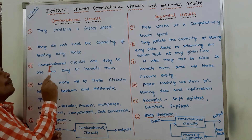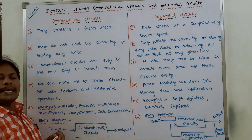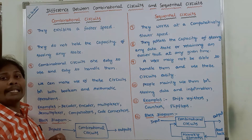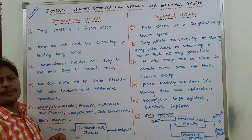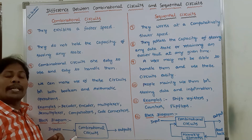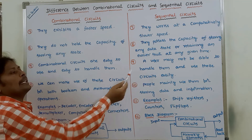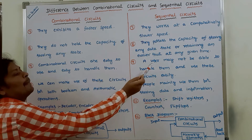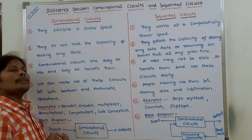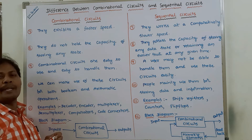Ninth point: combinational circuits are easy to use and easy to handle. It is very easy to use and handle combinational circuits, with no difficulty. Whereas in the case of sequential circuits, a user may not be able to handle them and use these circuits easily. Sequential circuits are easy to use but difficult to handle.